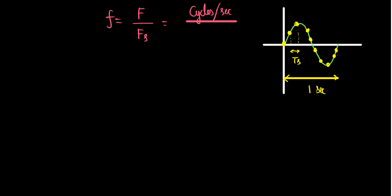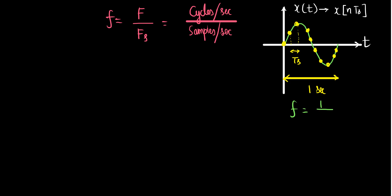So we have taken ten samples in one second, making Fs equal to ten, while capital F is one. The original signal x of t is sampled to get x of n. Fs is the sampling frequency indicating samples per second. Therefore, small f equals one divided by ten, because ten samples compose one cycle.